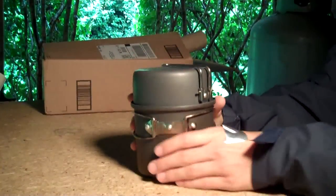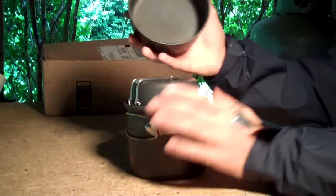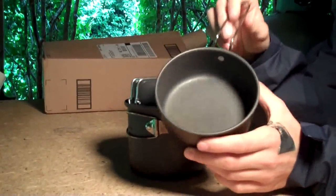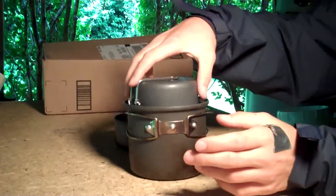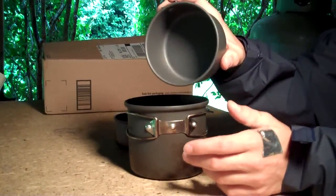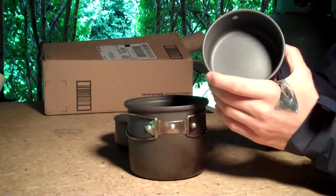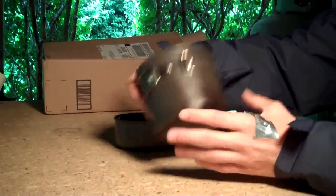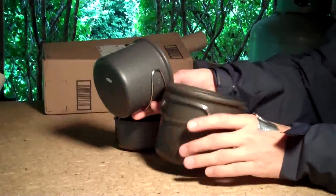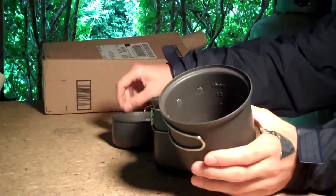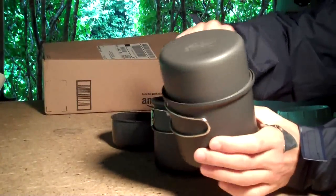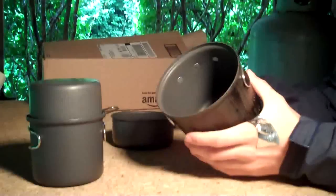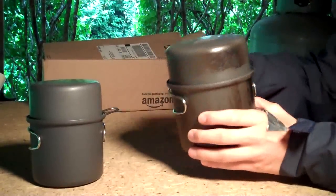So this one contains basically a small pot lid and or plate. A small pot lid and or plate. I guess a bowl, maybe. And then it has a small pot with the lid right there. And then it has the large pot with the lid.